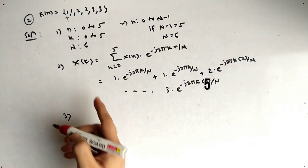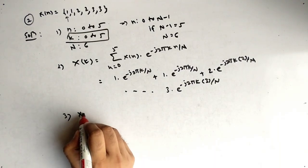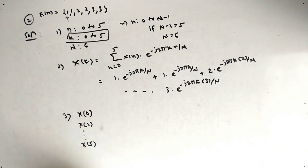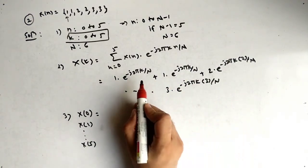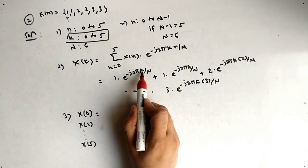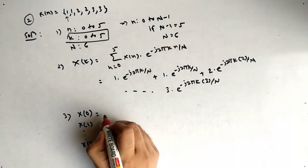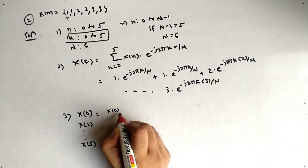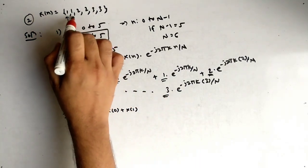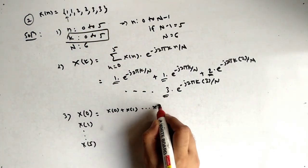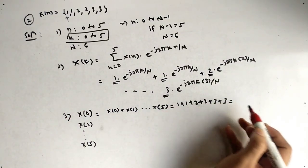To find the sequence, we substitute k = 0 through 5. For X[0]: when k = 0, all exponentials become e raised to 0 = 1, so X[0] is simply the sum of all x[n] values: 1 + 1 + 2 + 2 + 3 + 3 = 12.